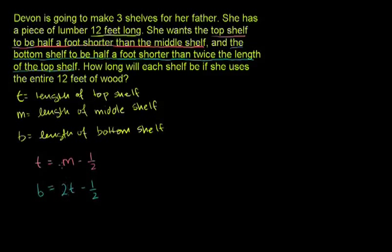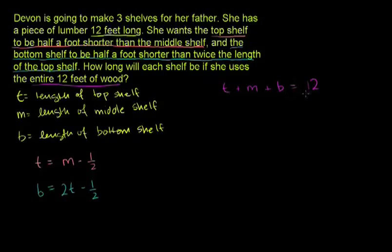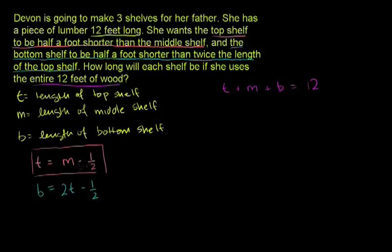We can't solve it with just those two constraints, but we have more information. She uses the entire 12 feet of wood, so the lengths of all the shelves must add up to 12: T + M + B = 12. Now we can get everything in terms of one variable — let's use M and then substitute. We already have T in terms of M: T = M - 1/2.